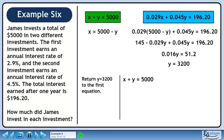Now we'll return the y value of 3200 to the first equation. Plug in 3200 for y as shown in the animation. Solving for x gives 1800.